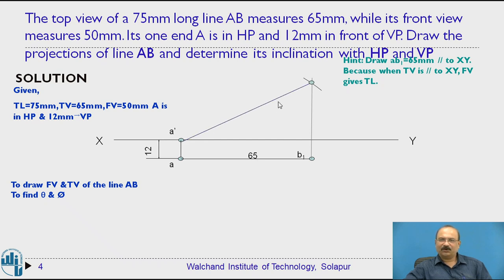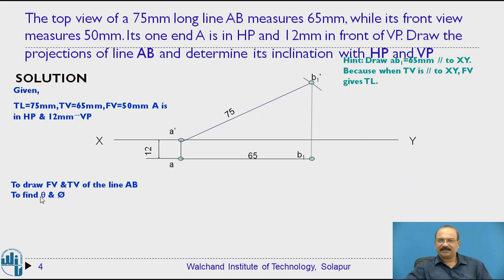Join the points and mark B1 dash. This length is 75mm. The angle made by this line with the horizontal reference plane is theta. Measure this angle — theta is approximately 31 degrees. A tolerance of plus or minus 1 degree is acceptable, but aim for accurate measurement.